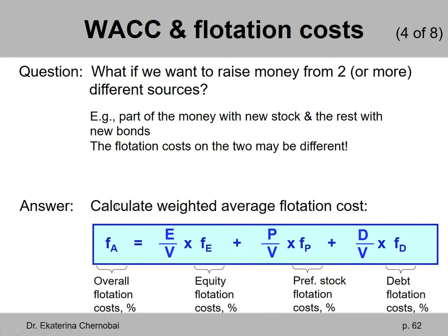To figure out the overall flotation cost that covers several different sources of financing, we need to calculate the so-called weighted average flotation cost, which we denote by F subscript A, where A stands for assets. F_A equals the weight of equity — where we take the market value of equity divided by the market value of the firm overall — multiplied by equity's flotation cost F_E. Then we add the weight of preferred stock times its flotation cost, and then we add the weight of debt multiplied by debt's flotation cost F_d.